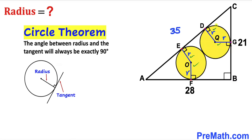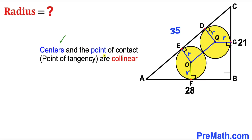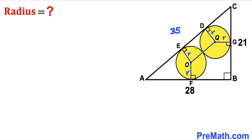Connecting centers O and Q, and recalling that the centers and the point of contact are collinear, centers O, Q and the tangency point between them lie on the same line. This gives us rectangle OQDE, where side OQ equals side DE. Since each radius is r, OQ equals r plus r, giving us 2r, and therefore DE is also 2r.